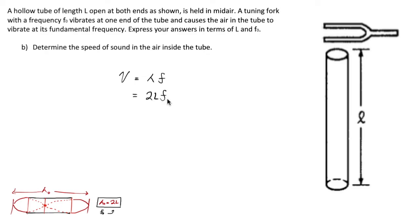We just need to use our results where our wavelength is going to be 2L and our frequency is going to be the fundamental that they gave us. So we have the velocity, which is the wavelength and the frequency that that wavelength is associated with. There is the speed of sound in the air inside this tube. It should always be 2 times the length times the fundamental frequency, which is pretty elegant and pretty convenient.